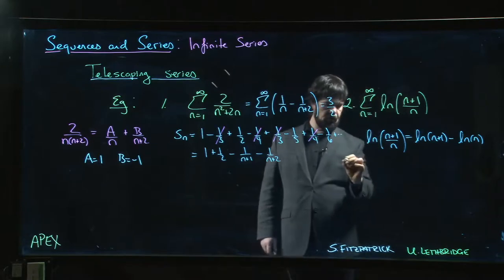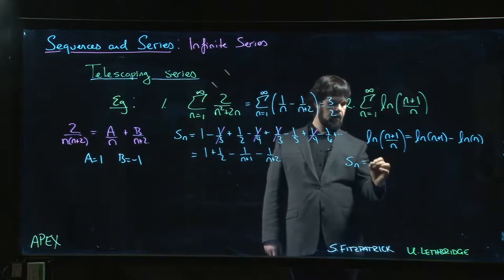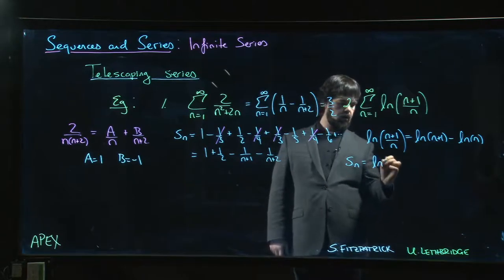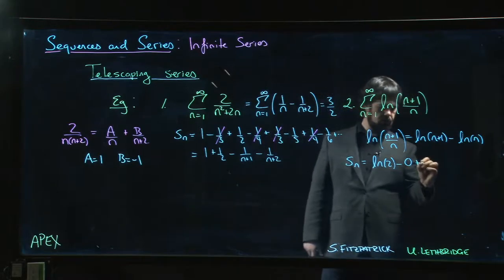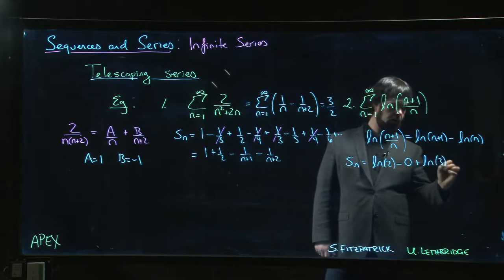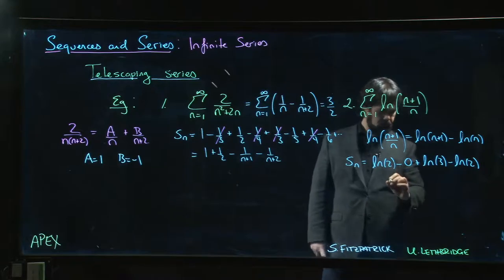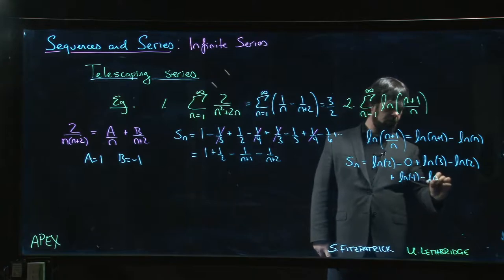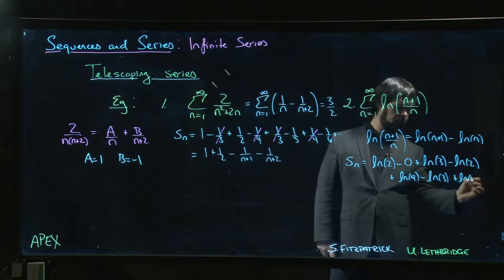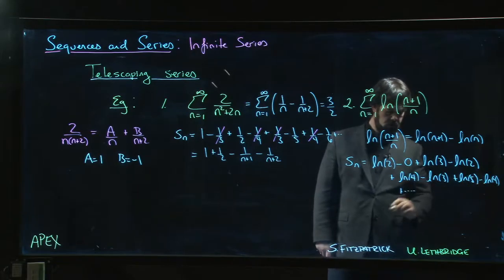So, that means if we start writing out the partial sums, right? Sn. It's going to be, well, first of all, log 2 minus log 1, which is just 0. Plus log 3 minus log 2. Then it's going to be log of 4 minus log of 3, and then log of 5 minus log of 4, and so on.